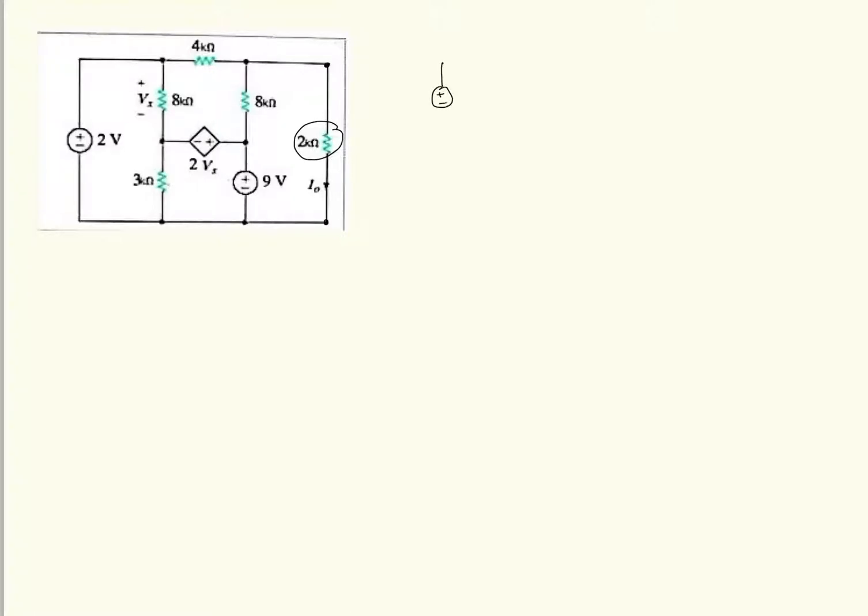So which is drawing here 2 volts. This is 8 kilo ohm. This is 3 kilo ohm. Here it is 4 kilo ohm resistance. Here a dependent voltage source is there which is 2 Vx. Here it is Vx. And here it is plus 9 volt. So this is the open circuit voltage or Thevenin's voltage.